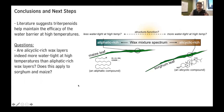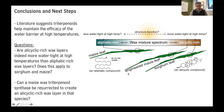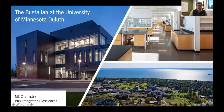Some of the open questions we're now working to address: Are allicyclic-rich wax layers indeed more watertight at high temperatures relative to aliphatic-rich ones, and does this apply specifically to sorghum and maize? Could that maize gene be resurrected to create a more allicyclic-rich wax layer on that species? And would that plant with the resurrected gene be more drought resistant or more resistant to water loss at high temperatures? These are the questions we're working on in my new lab at the University of Minnesota Duluth.